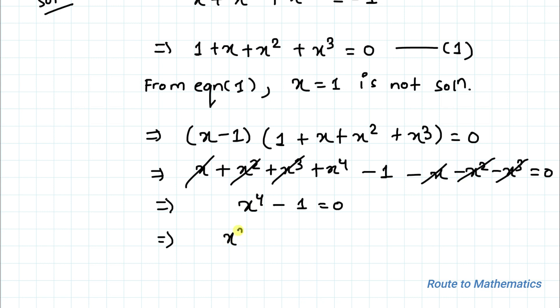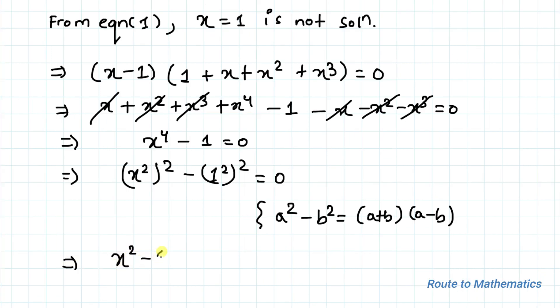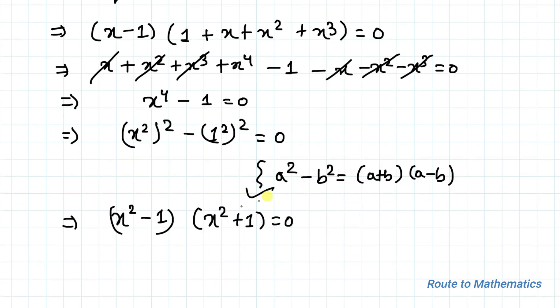We can write this as (x²)² - (1)² = 0. Applying the algebraic identity a² - b² = (a + b)(a - b), we can write (x² - 1)(x² + 1) = 0. Again applying the same algebraic identity, we have (x + 1)(x - 1)(x² + 1) = 0.